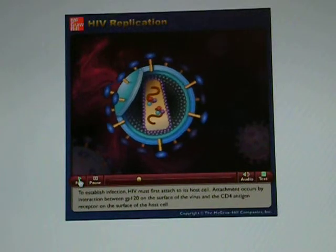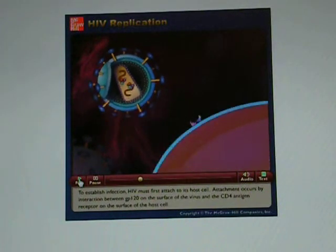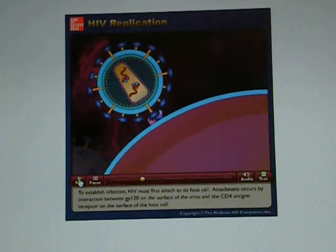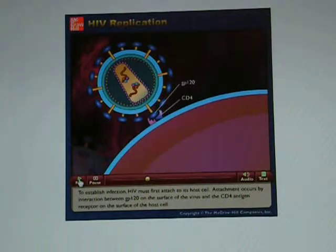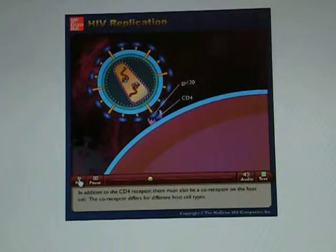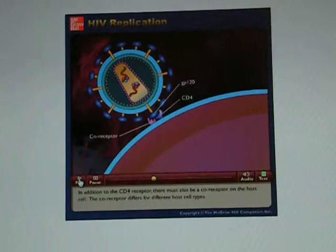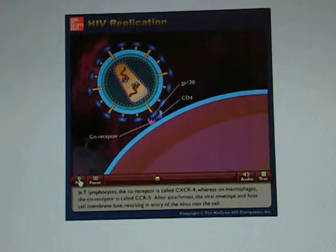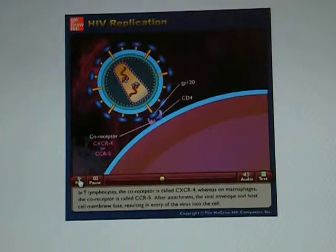To establish infection, HIV must first attach to its host cell. Attachment occurs by interaction between GP120 on the surface of the virus and the CD4 antigen receptor on the surface of the host cell. In addition to the CD4 receptor, there must also be a coreceptor on the host cell. The coreceptor differs for different host cell types: in T lymphocytes, the coreceptor is called CXCR4, whereas on macrophages, the coreceptor is called CCR5.